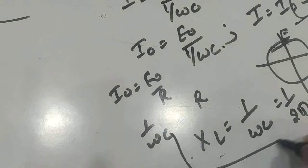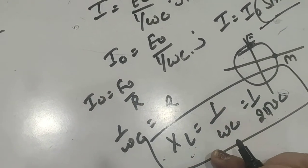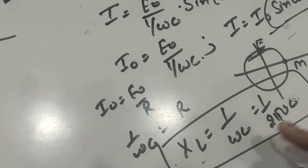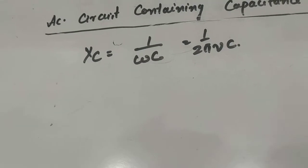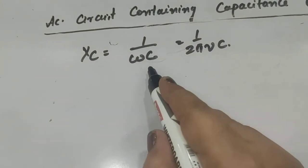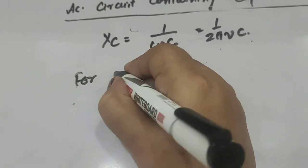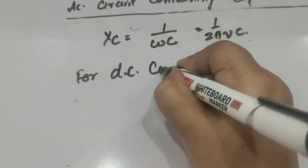Now we will see how this capacitive reactance affects AC as well as DC. So Xc = 1/(ωC) = 1/(2πνC). Now for DC circuits...